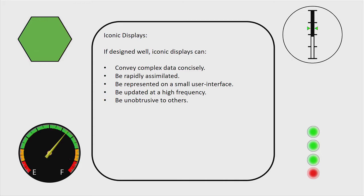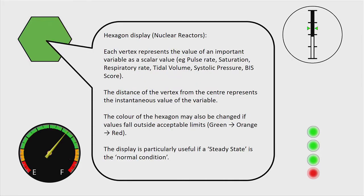The first icon is borrowed from the nuclear power industry and is called the hexagon display. It puts a scalar value on each vertex of the hexagon, and as the value changes, the vertex moves and the hexagon changes shape — it may also change colour. In practice it doesn't work very well during anesthesia because things are changing too quickly, but it works quite well on bypass and is a very good indicator of the steady state.